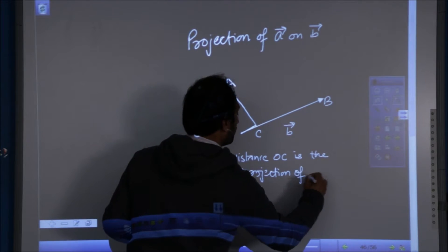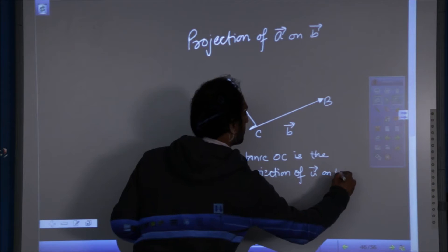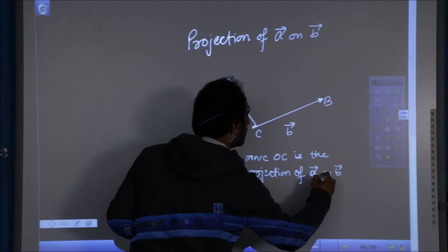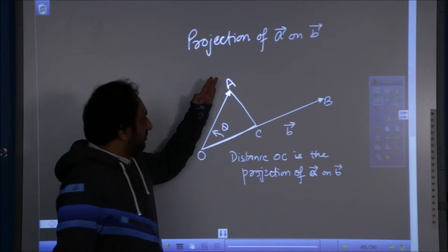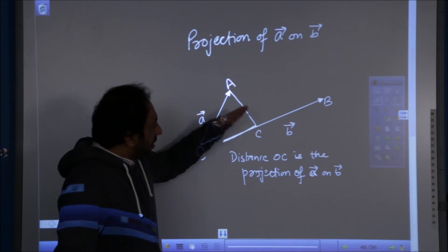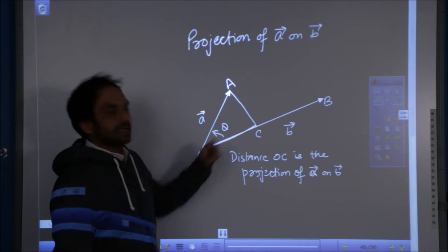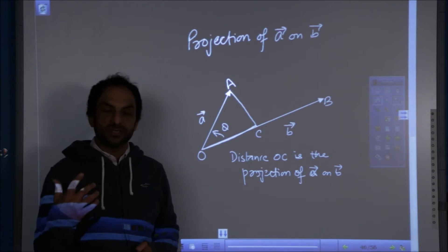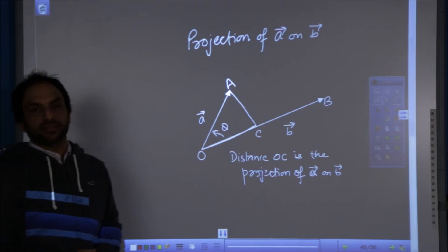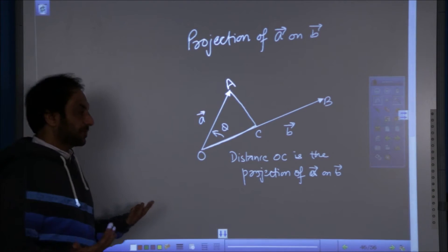Projection of A on B, or in very simple terms we can say the impact of vector OA on OB is OC. OA vector covers OC distance on OB vector. Now, what is the expression for it?